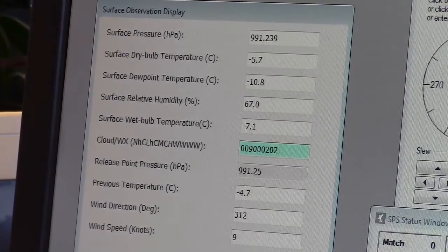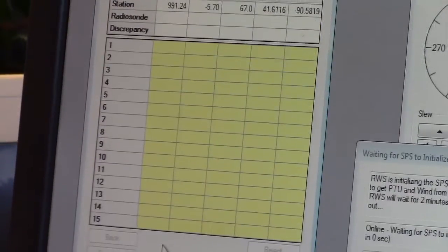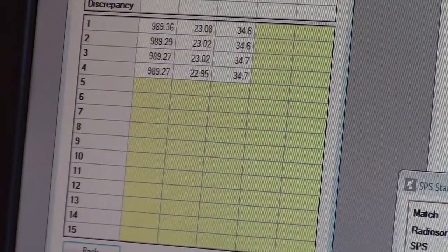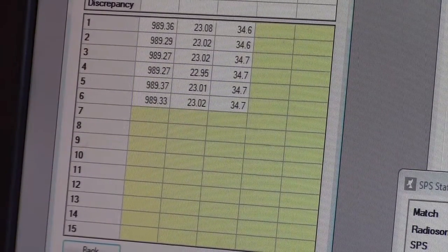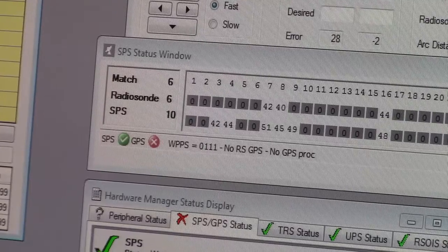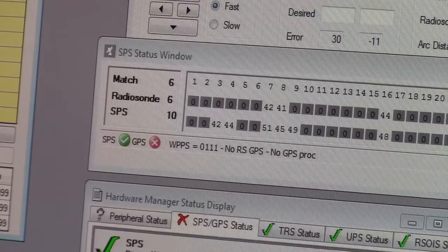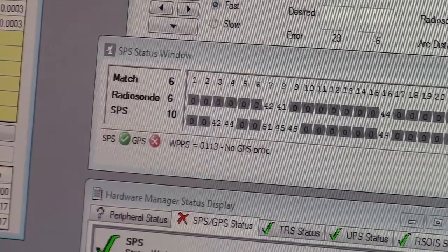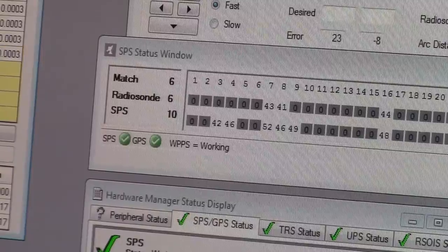We then can begin the process of baselining the radiosonde, which is where we ensure that the temperature, pressure, and humidity sensors are working properly. We also want to make sure we are receiving an acceptable amount of GPS satellite matches, as we need a minimum of at least three for an accurate position calculation. Once we confirm everything is in working order, we can go outside.